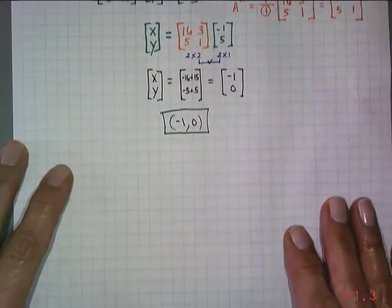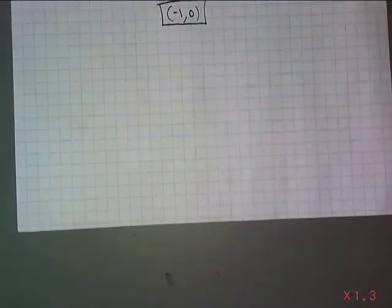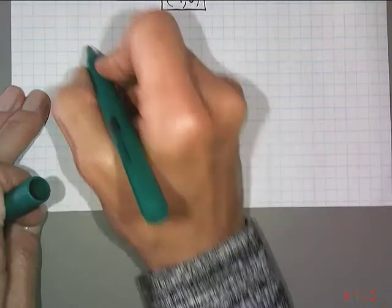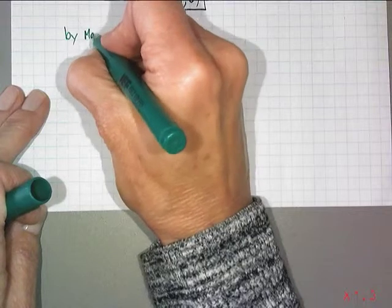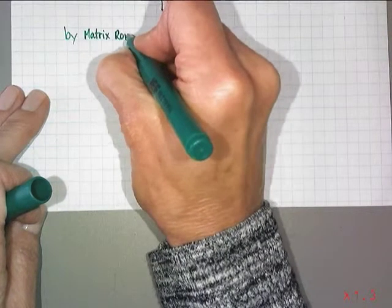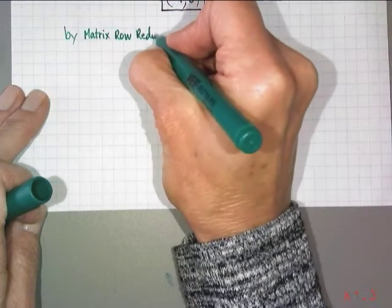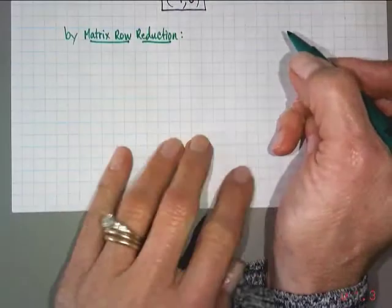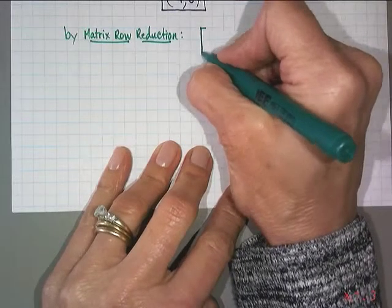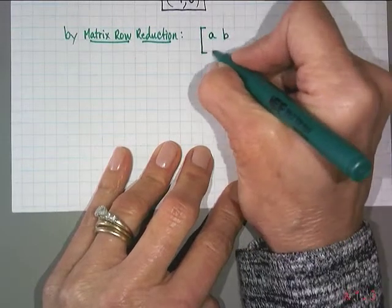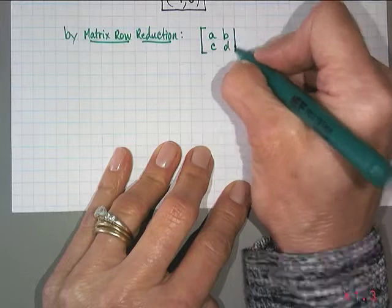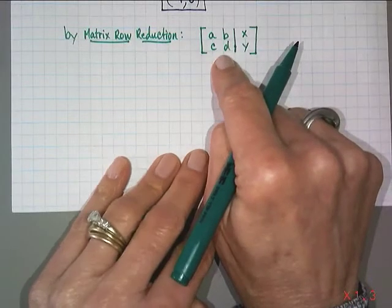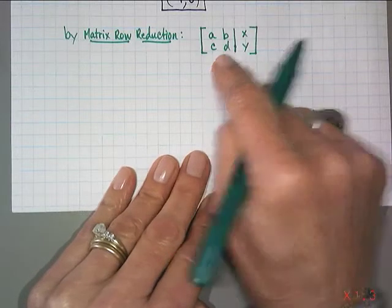Everyone's favorite, right? Well it's mine anyway. So what I'm going to do is write by matrix row reduction. This is how it goes: you're going to take a matrix, let's say a b c d. By the way, the a b c d are the coefficients of the variables in your system of equations.